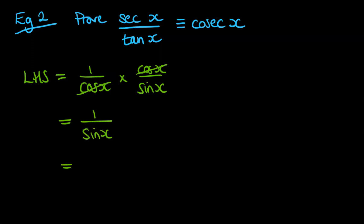So the cos x and the cos x would cancel. We get 1 over sin x, and that is cosec x by definition. So that is now equal to the right-hand side. We've finished that demonstration.